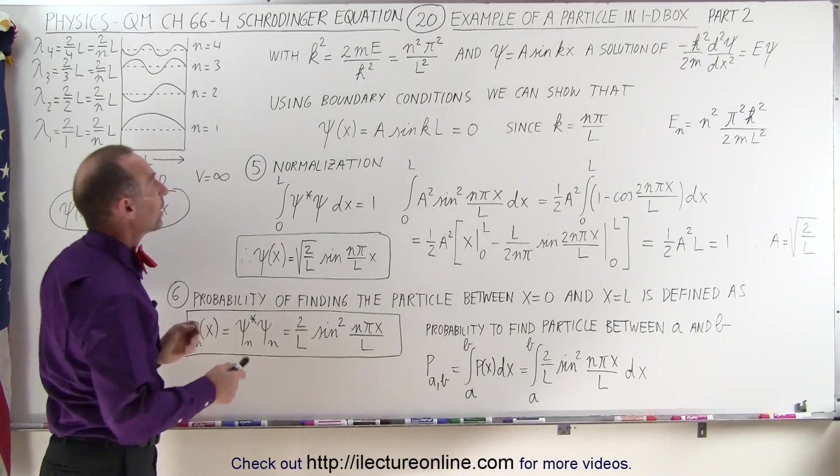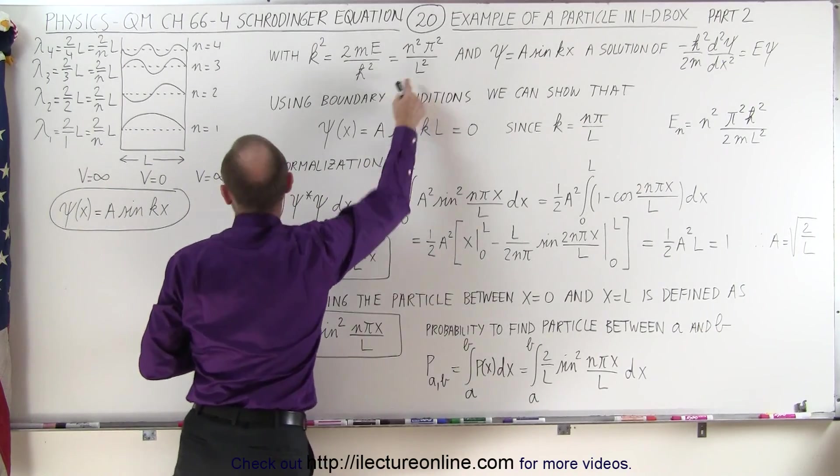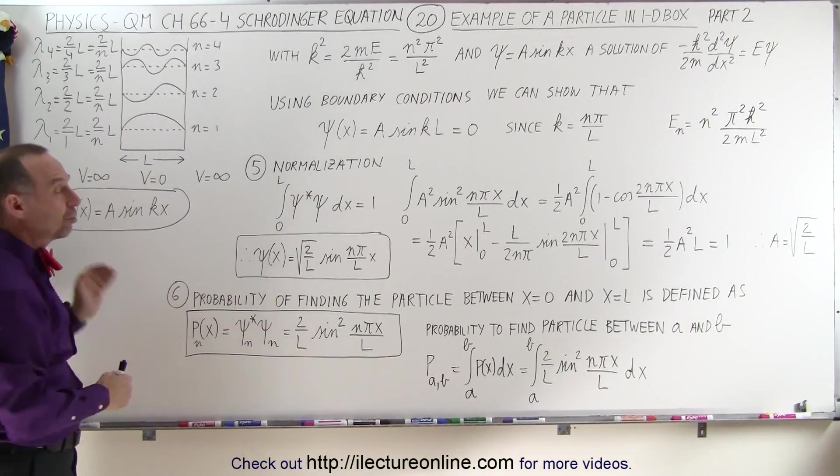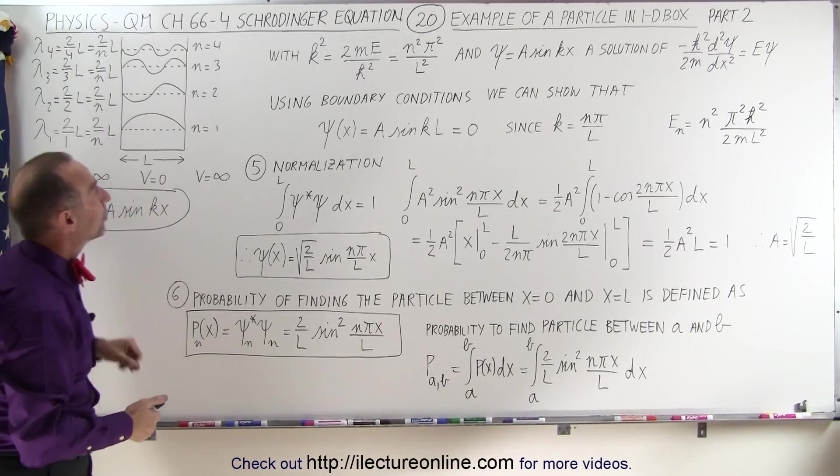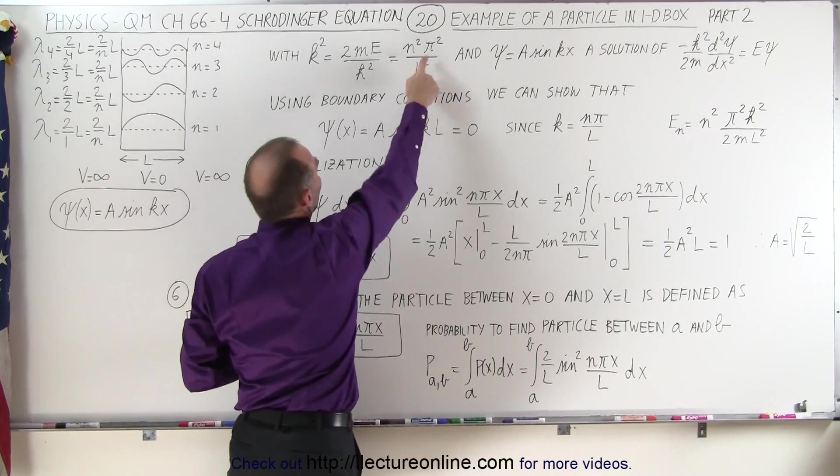We can also show that this can be used for the k inside the general wave equation, which we knew was equal to a times the sine of kx. k, the wave number, can now be written as n pi over l.